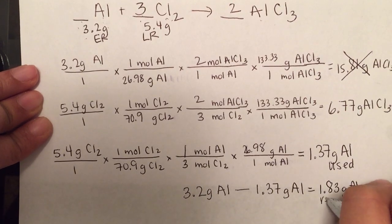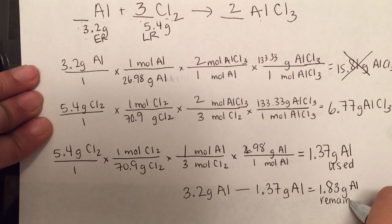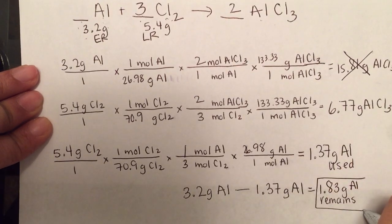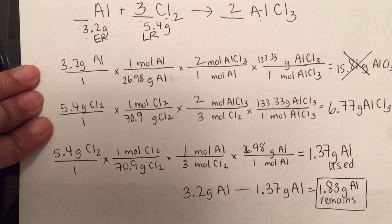And we'll get 1.83 grams of aluminum. And that's what remains, or you can say that it's left. So this is the unused aluminum.